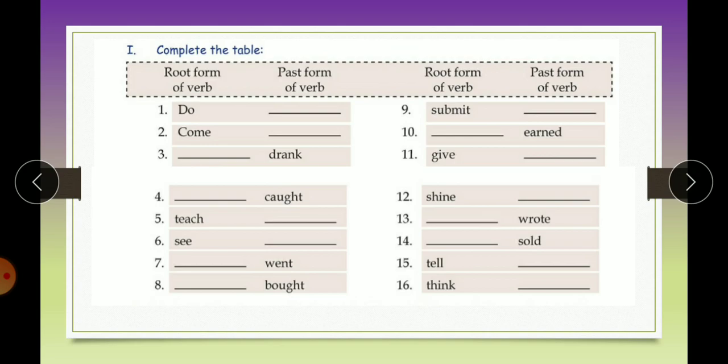Now let's start with the first table. Complete the table: root form, past form. So in some, the root form is missing and in some, past form is missing. So what are you supposed to do? After reading the root form you have to fill the past form. Wherever the root form is not given, read the past form of the verb and fill it here.